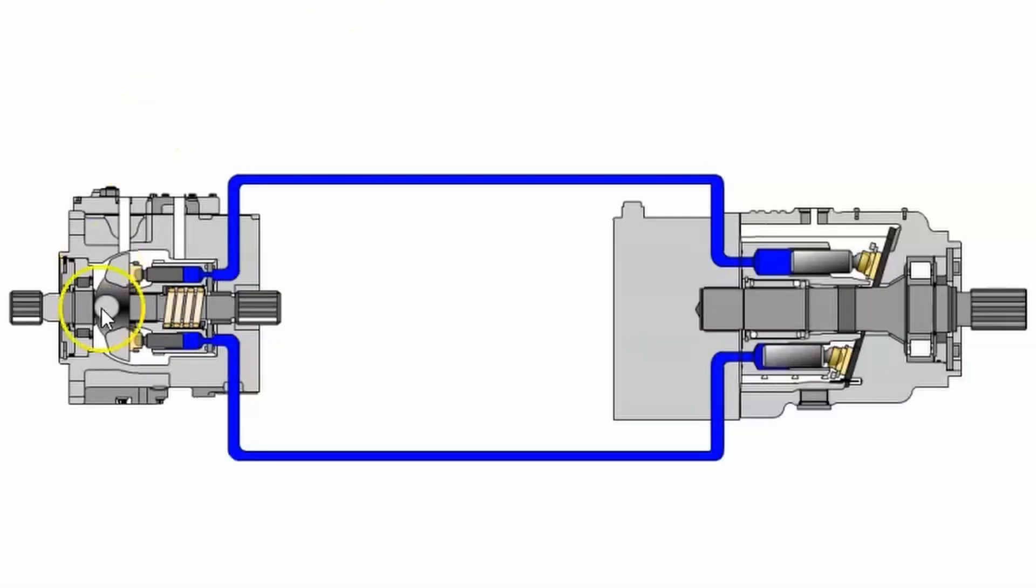We are looking at the simple closed loop hydrostatic system example. It is a single drive system here, which means there is one pump and one motor. There's an axial piston pump with variable displacement. We can see the swash plate and the pistons here.